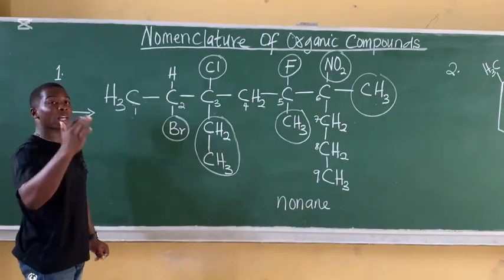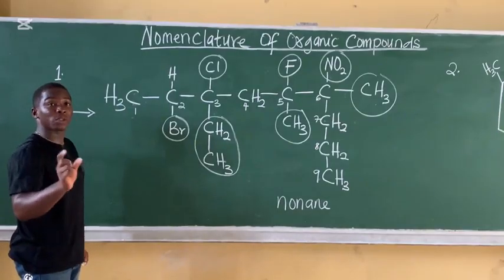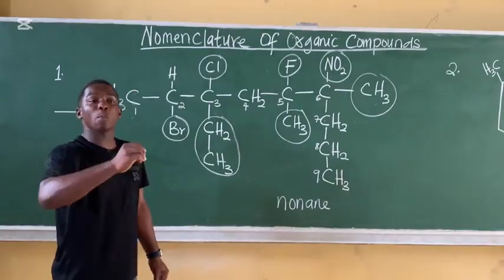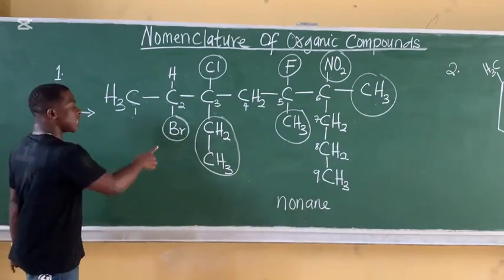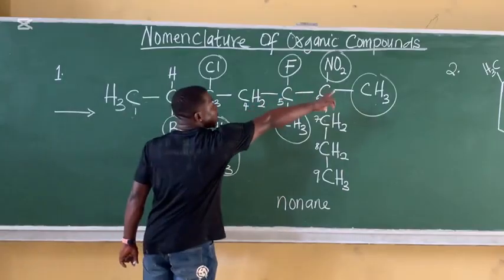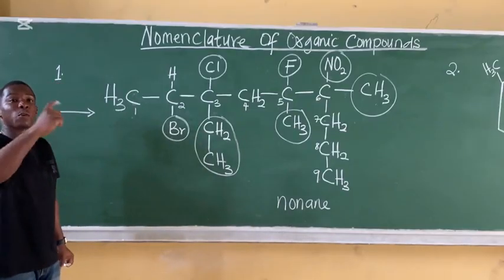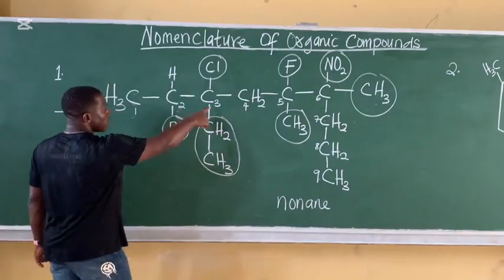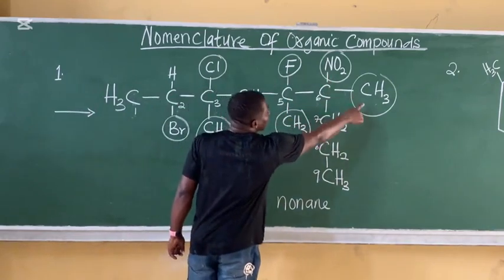After getting your longest carbon-to-carbon parent chain, the next thing is to number from both directions. Your numbering gives preference to the lowest alphabetical order — your numbering must be in the direction of the lowest alphabetical substituent. Among all these substituents, the lowest alphabetical order starts with B (bromo). So that is why my counting started from this direction. You must give preference to the lowest alphabet when counting.